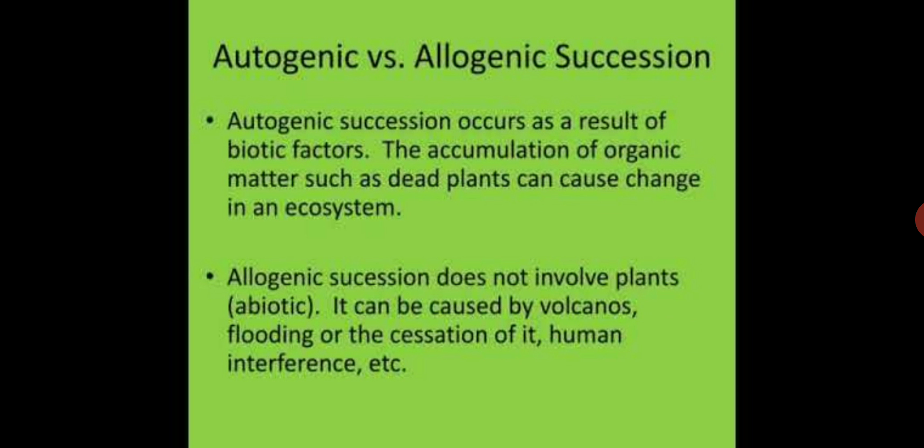Autogenic and allogenic succession: Autogenic succession is where successional changes are largely determined by internal interactions, that is, brought about by organisms themselves. Therefore, it is also called self-generated succession. If outside forces like storm or fire are responsible for these changes, it is known as allogenic or externally generated succession.